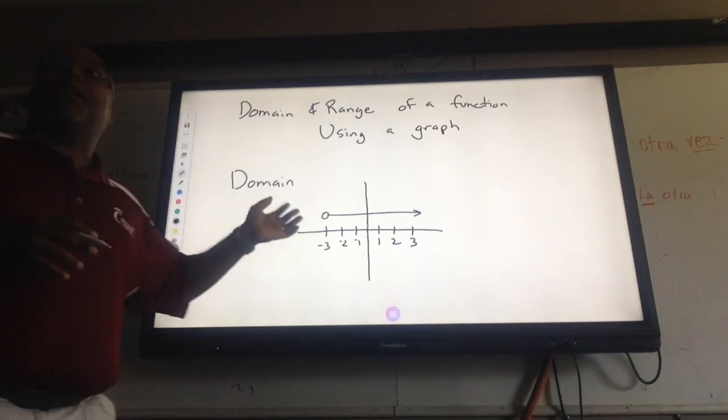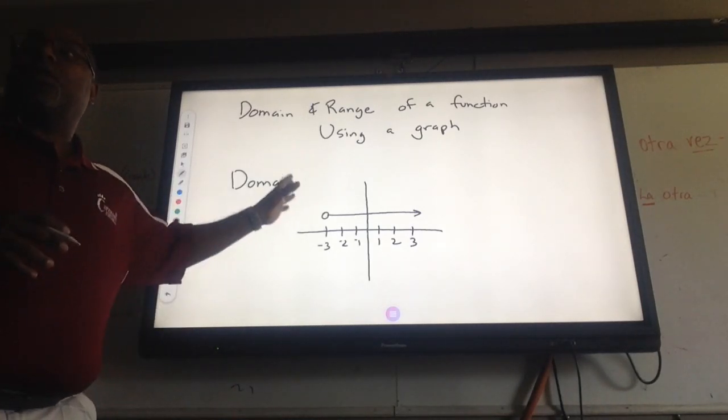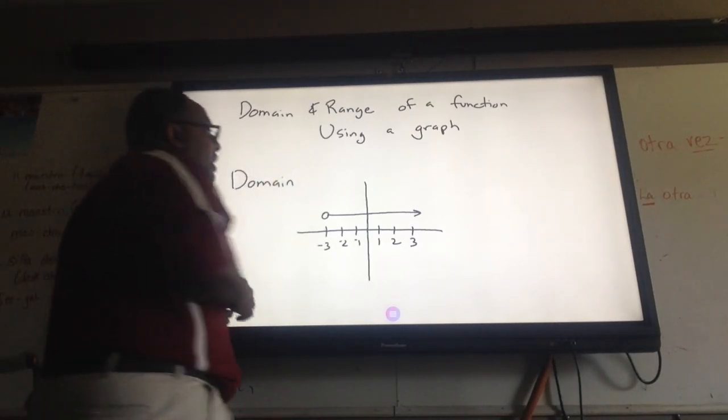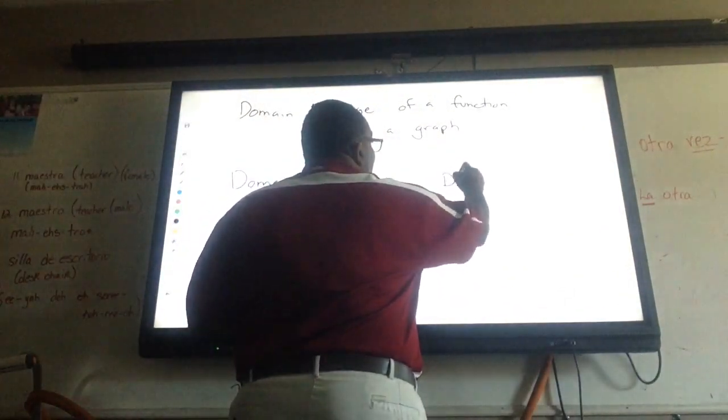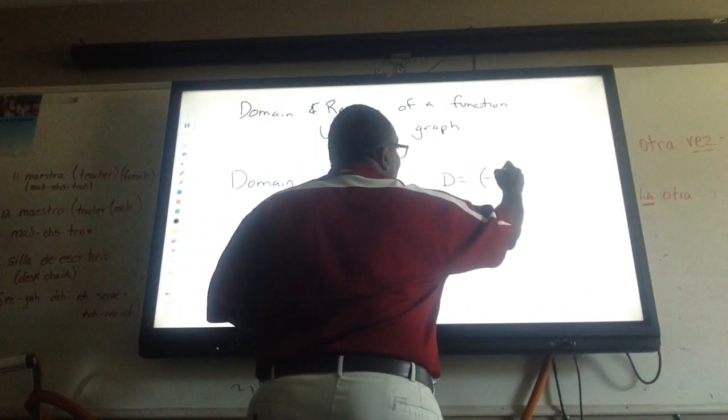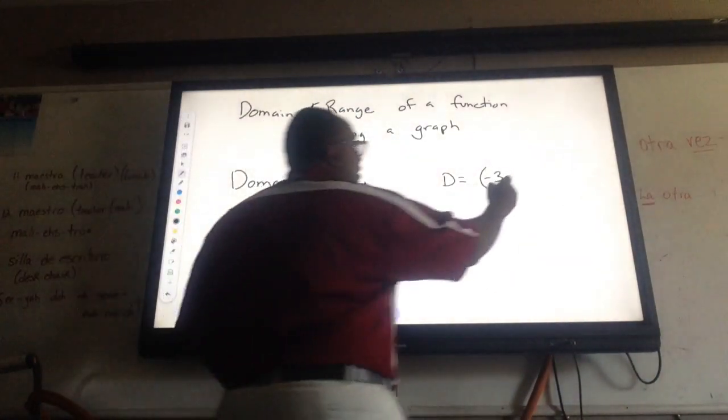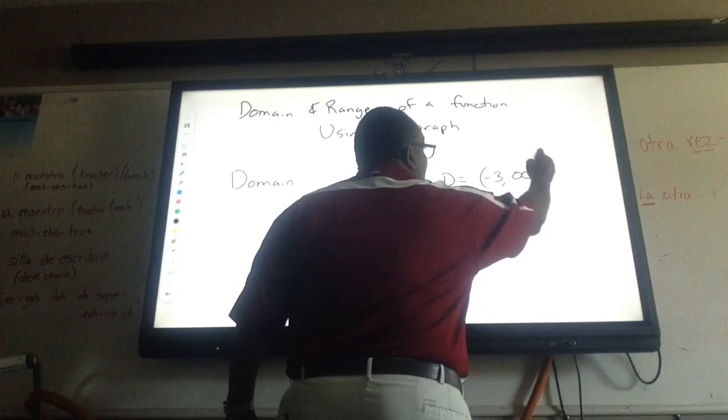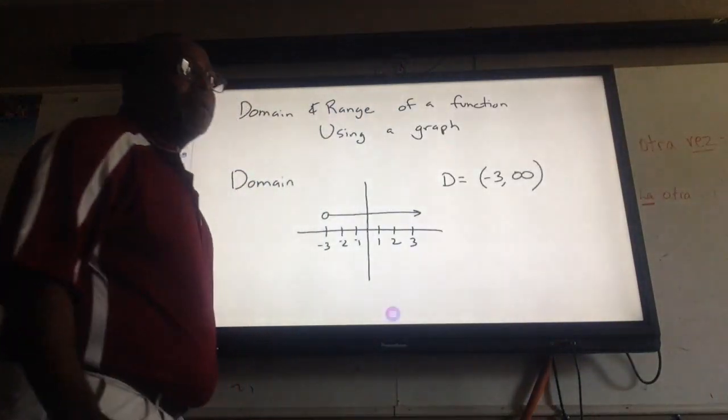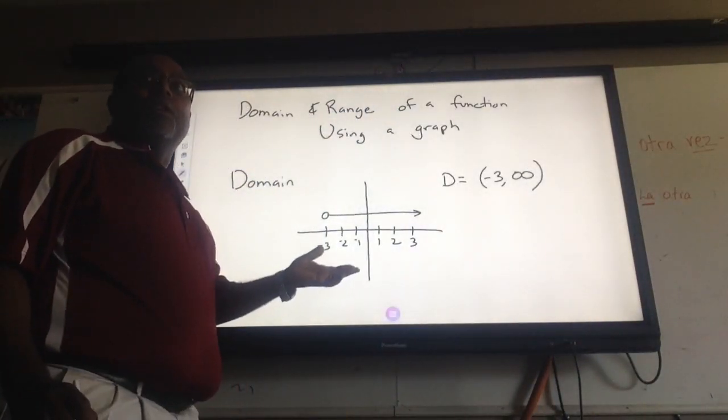Why do I know that negative 3 is not included? Because the circle is open, right? So if I wrote this in interval notation, my domain would equal negative 3 to positive infinity. Pretty simple, right?